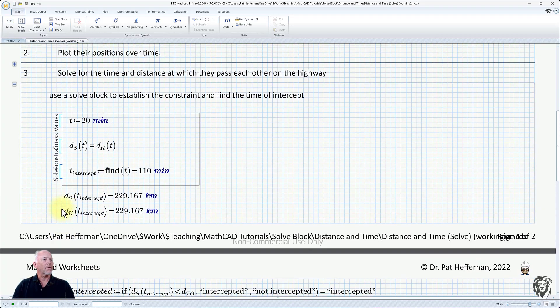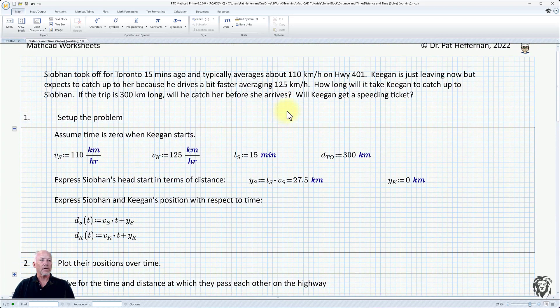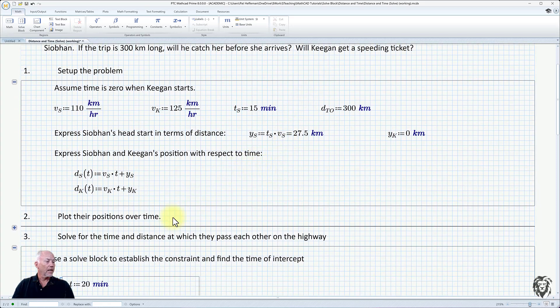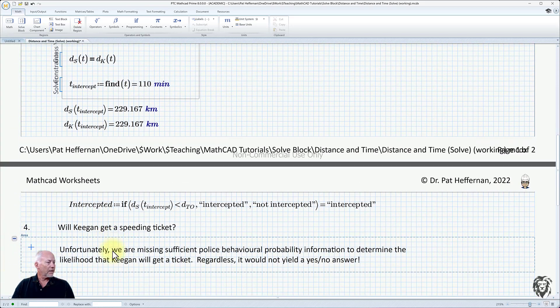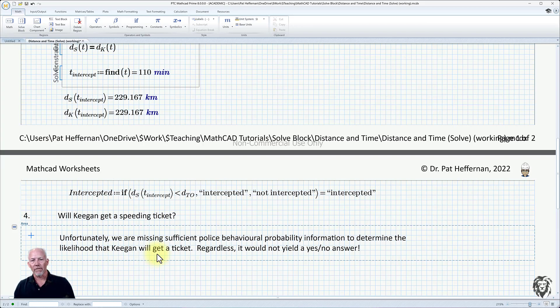So the last fun question was, will Keegan get a speeding ticket? That's always a chance. But unfortunately, we just don't have enough information. This is really more of a personal behavior and statistics and statistical analysis to be able to tell whether Keegan's actually going to get caught going 125 kilometers an hour down the 401. So we just don't know.